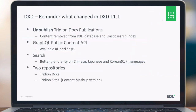A reminder of what is changing in DXD 11.1: we can now unpublish 3D Docs publications, so content is removed from the database and the Elasticsearch index. There is a new GraphQL public content API available at the GD API on the interactive service. Search is improved with better clarity on Chinese, Japanese, and Korean languages. We host two repositories in one environment for trading docs and trading sites, and you can query them separately on the GraphQL endpoint.